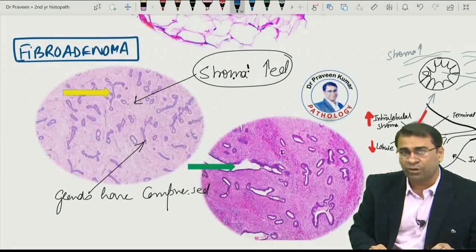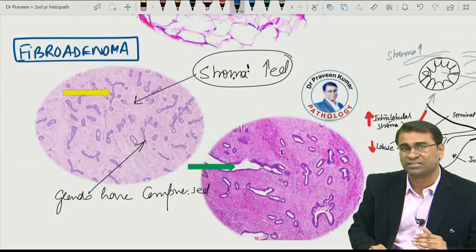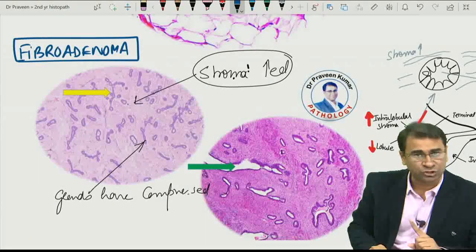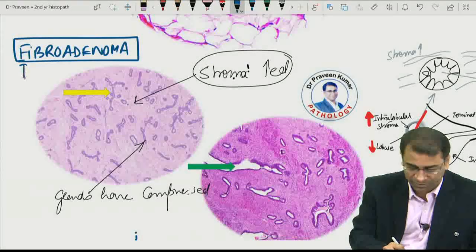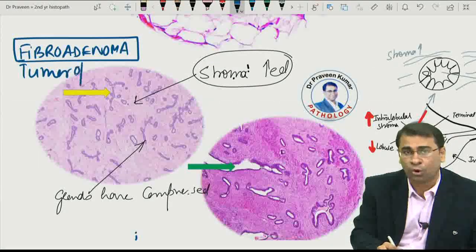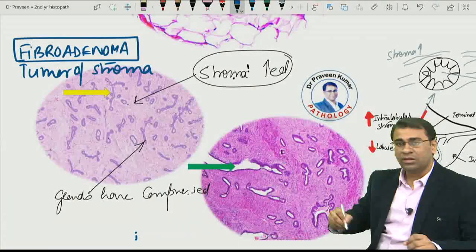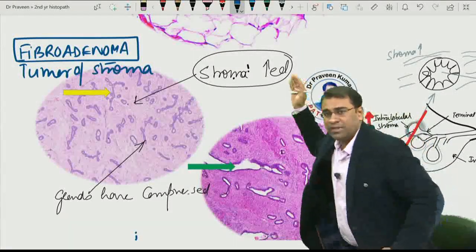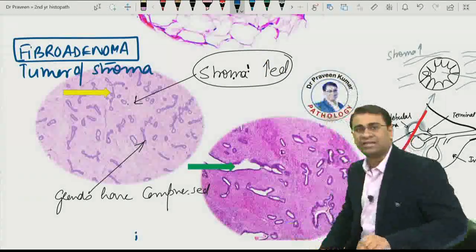So, in fibroadenoma, remember, it is a tumor of stroma. Fibroadenoma is a benign tumor of stroma. It is not a tumor of glands. It is a tumor of stroma. Therefore, the stromal area has increased, and the ducts have become compressed like a slit.